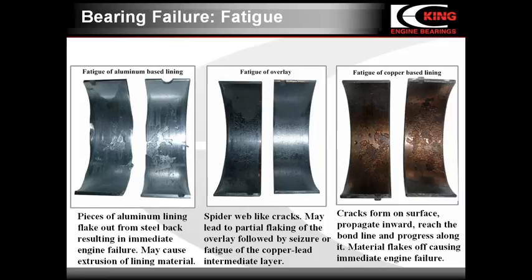Fatigue of the copper-based intermediate layer is shown in the right picture. It is similar to the fatigue of aluminum lining. The cracks form on the surface, propagate inside, reach the bond line between the steel and the intermediate layer, and progress along this line. The material flakes off, causing immediate engine failure.